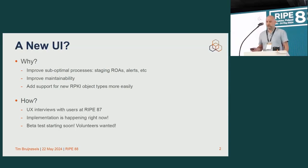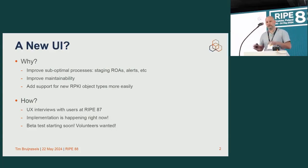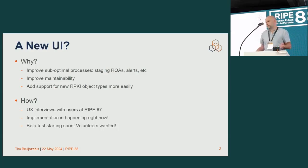What have we been doing? We've been doing a lot of work on the user interface for RPKI — the dashboard. The current interface actually works quite well, we believe, but some processes are a bit suboptimal. For example, when you create a ROA, there's a red button that appears in the bottom right of your screen. You have to notice that, click that, and say yes, I really want to create this thing. That's an example of a process that we want to improve.